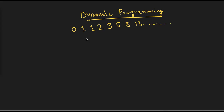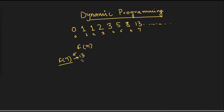Let us say you have to write a function — let's call it fn — which will return the nth element in the Fibonacci sequence. So the indices are 0, 1, 2, 3, 4, 5, 6, 7. If you call it for index 7, that function would return 13.